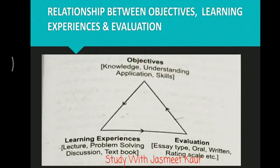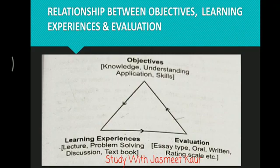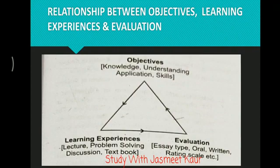There is an important relationship between objectives, learning experiences, and evaluation. First, we create objectives such as knowledge, understanding, and application skills. Then we provide learning experiences through teaching methods like lecture, problem solving, discussion, and textbooks. Finally, we evaluate students using essay-type questions, oral and written tests. We measure using various principles, techniques, and tools. These three — objectives, learning experiences, and evaluation — are interdependent.